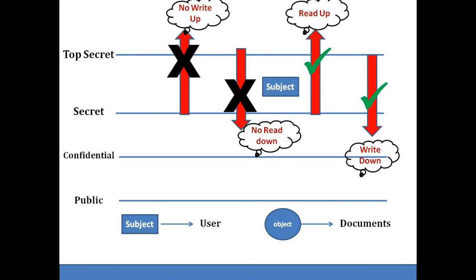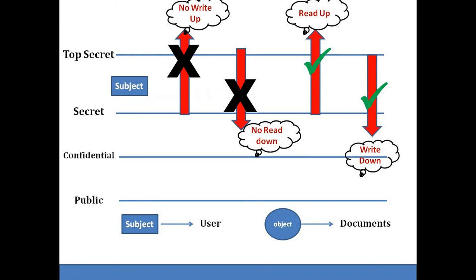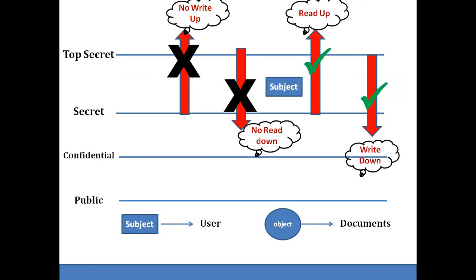This is said to be the no read down rule. Similarly, this user cannot be allowed to write at the upper level, that is, top secret documents. This is said to be the no write up rule. Alternatively, from the given current level, write down and read up is allowed. That is, this user can write confidential and public level documents, and can read top secret documents.